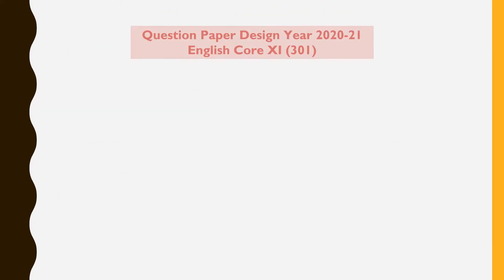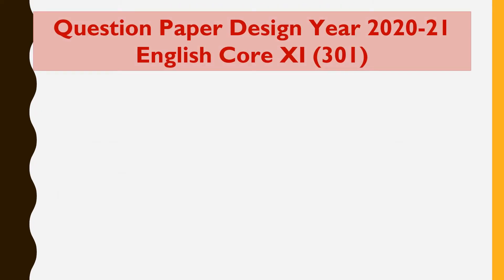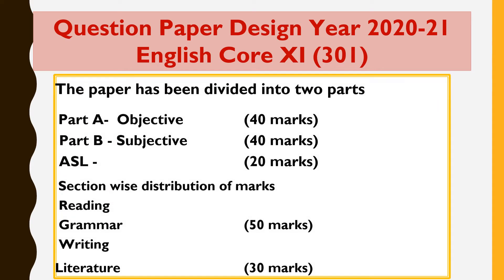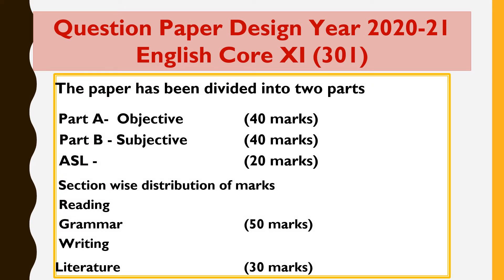For students, according to new exam pattern, English course paper has been divided into two parts. Part A will be objective and it will carry weightage of 40 marks. Part B will be subjective and it will consist of 40 marks questions. ASL, as usual, will be of 20 marks only. Section-wise distribution of marks is as follow. Reading, Grammar and Writing section will be of 50 marks. And Literature part will be of 30 marks only.